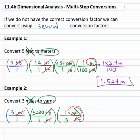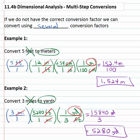Once we have the units we want, we can quickly solve by multiplying across the numerator: three times 5,280 times one yard is 15,840 yards, over one times one times three. Dividing by three gives us 5,280 yards as our equivalent to three miles. So if we don't have the exact conversion factor we need, we will just keep multiplying by more and more conversion factors, changing the units we have into another unit until we finally have the units we want.